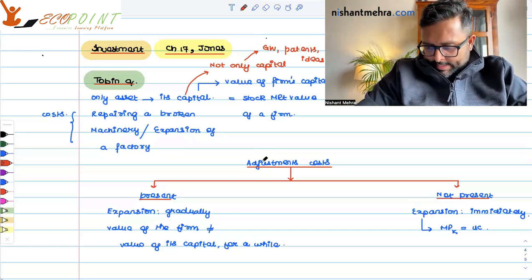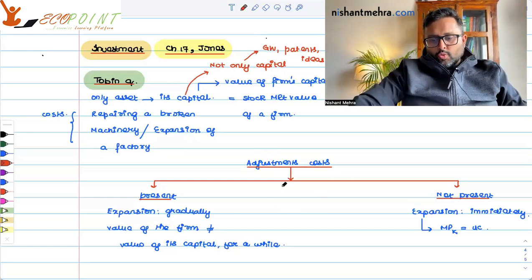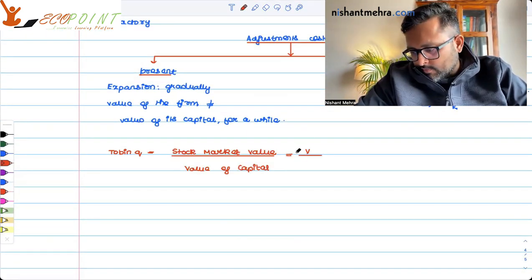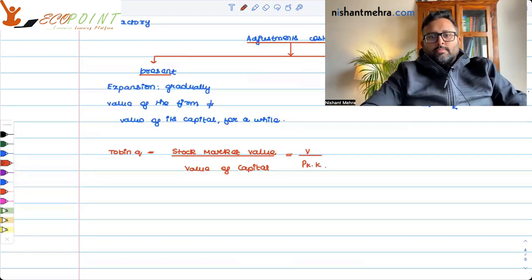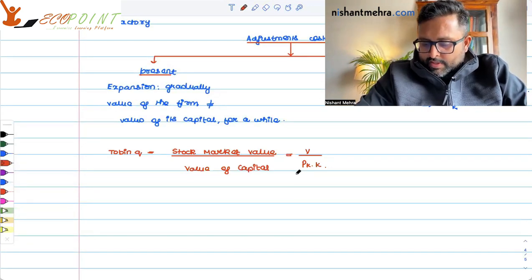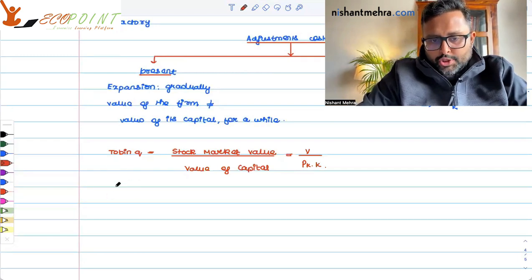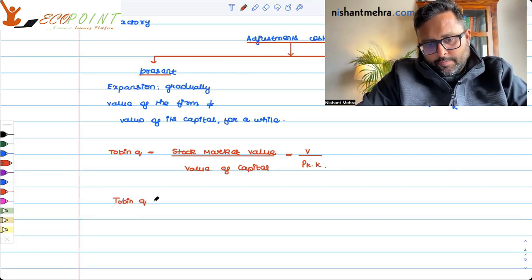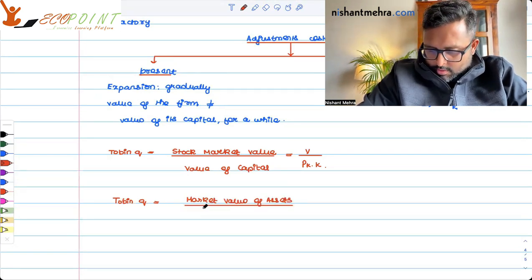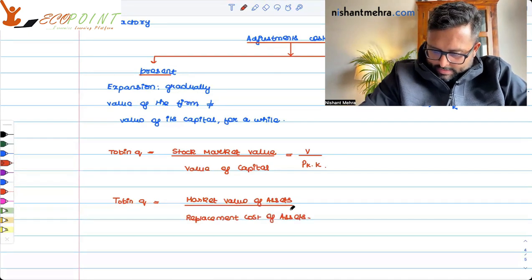Tobin's Q is defined as: Q = V / (K × Pk), where V is the stock market value and the value of capital is capital multiplied by the price of capital. There is also one more definition of Tobin's Q: it is the market value of assets, which is nothing but the stock market value, divided by the replacement cost of assets.